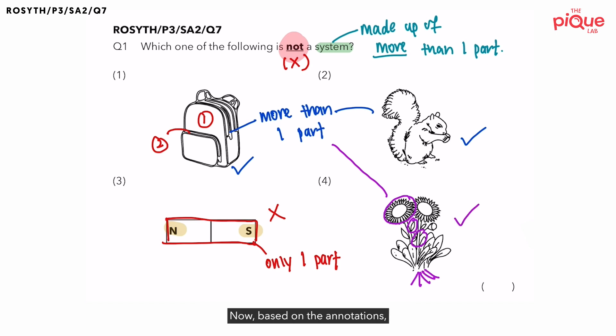Now, based on the annotation, are you able to tell who is the non-system now? Remember, we have to look for the option that has a cross. And the one with a cross will be the magnet. Hence, answer will be option 3.